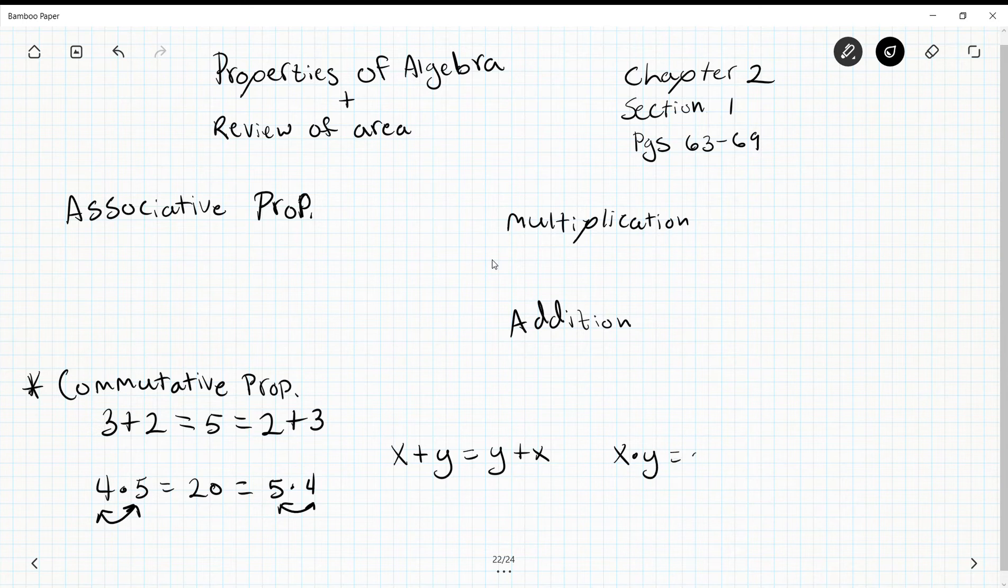Now the associative property needs three pieces and it just means that no matter how I group my operation it will still give me the same result. I'm gonna use some even numbers here.